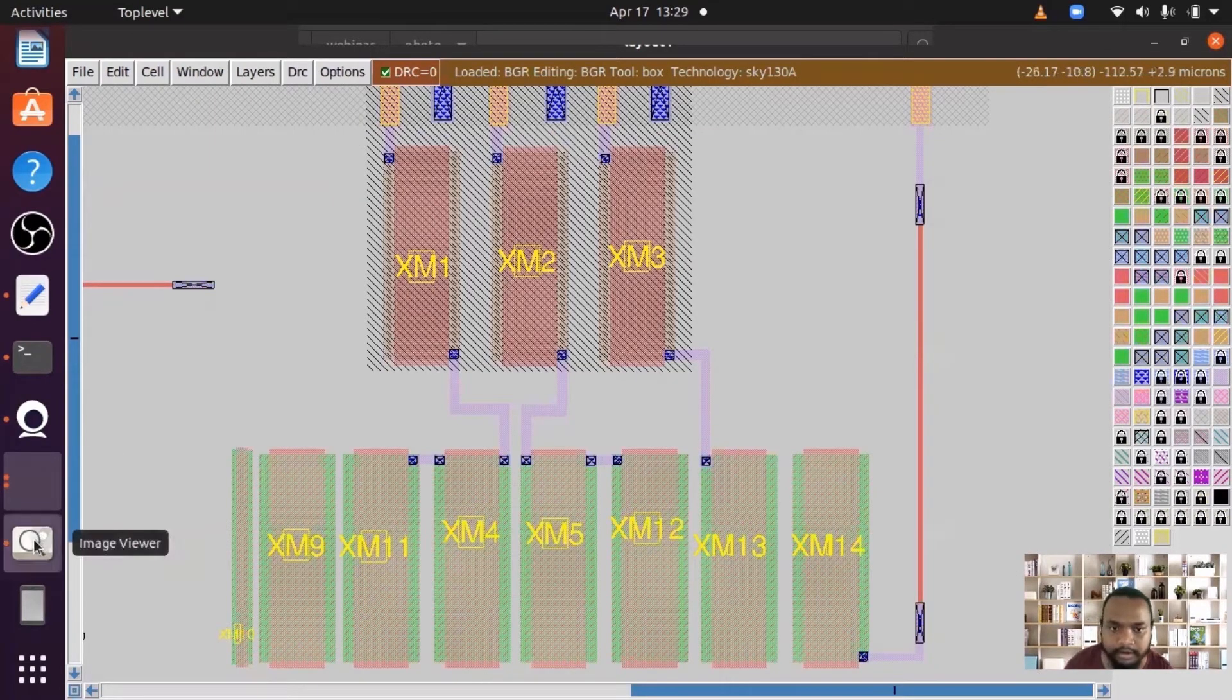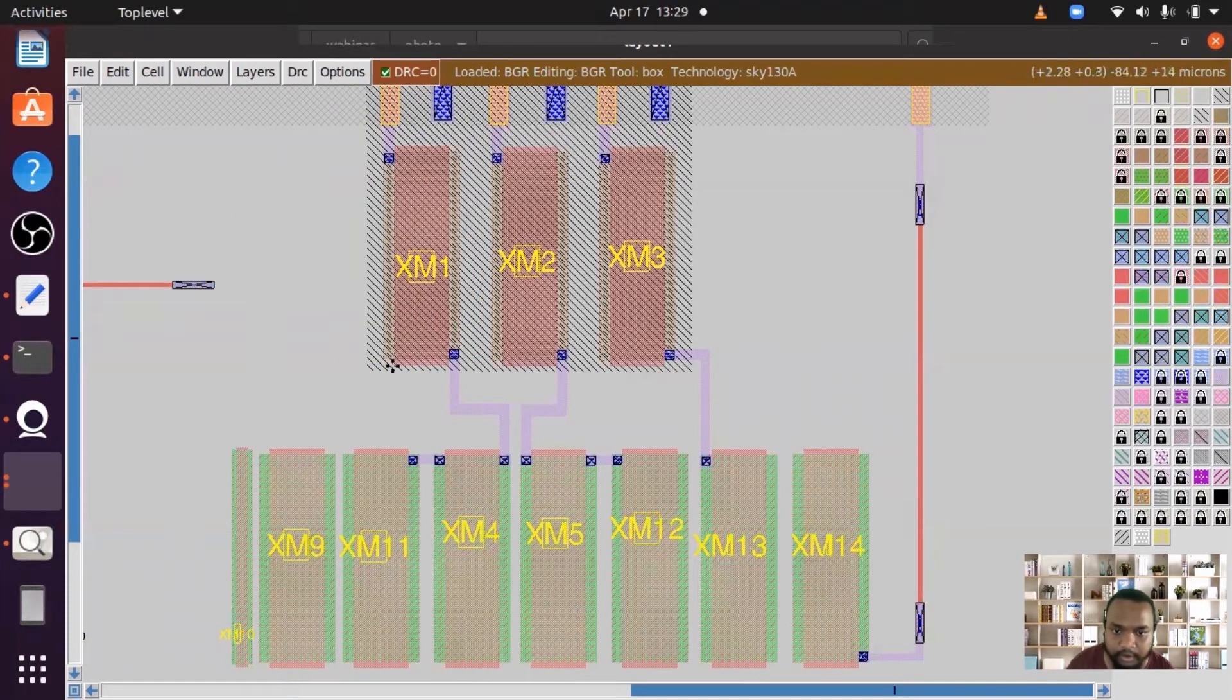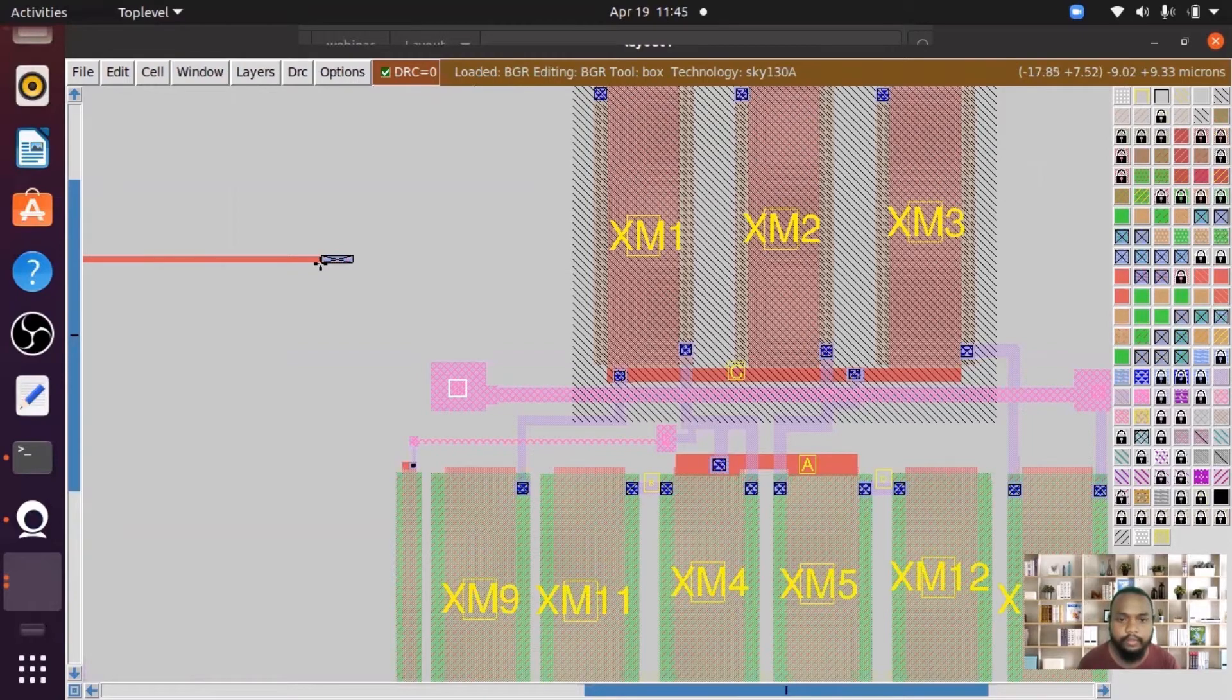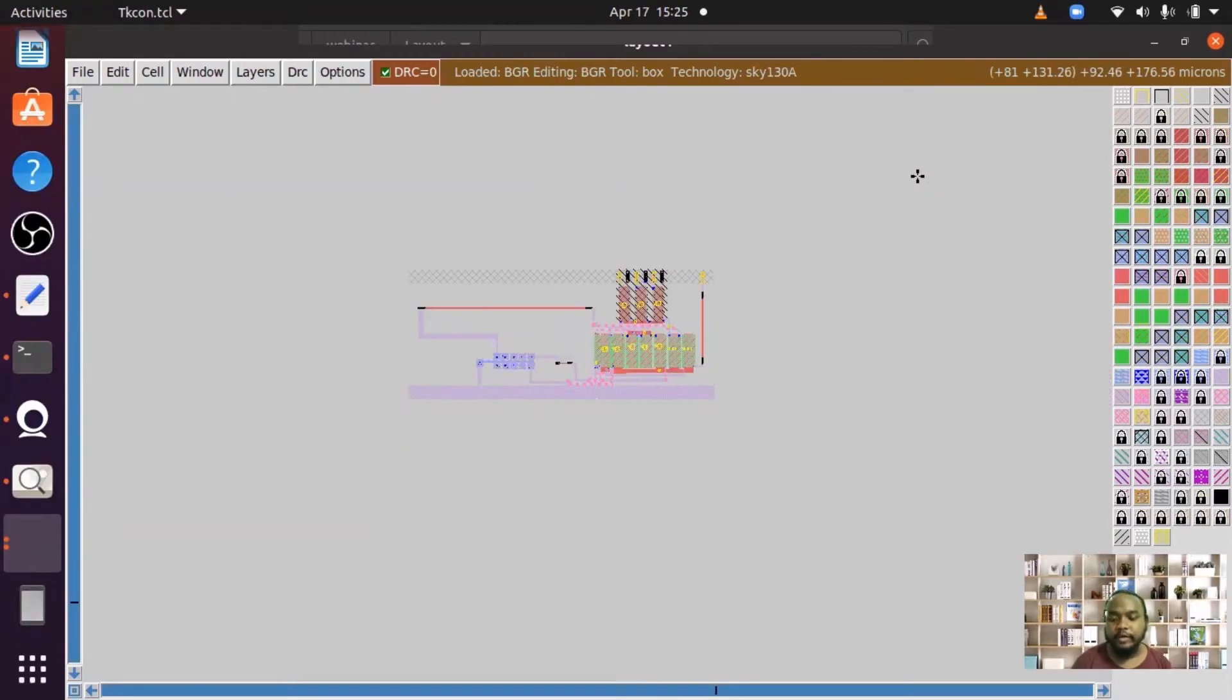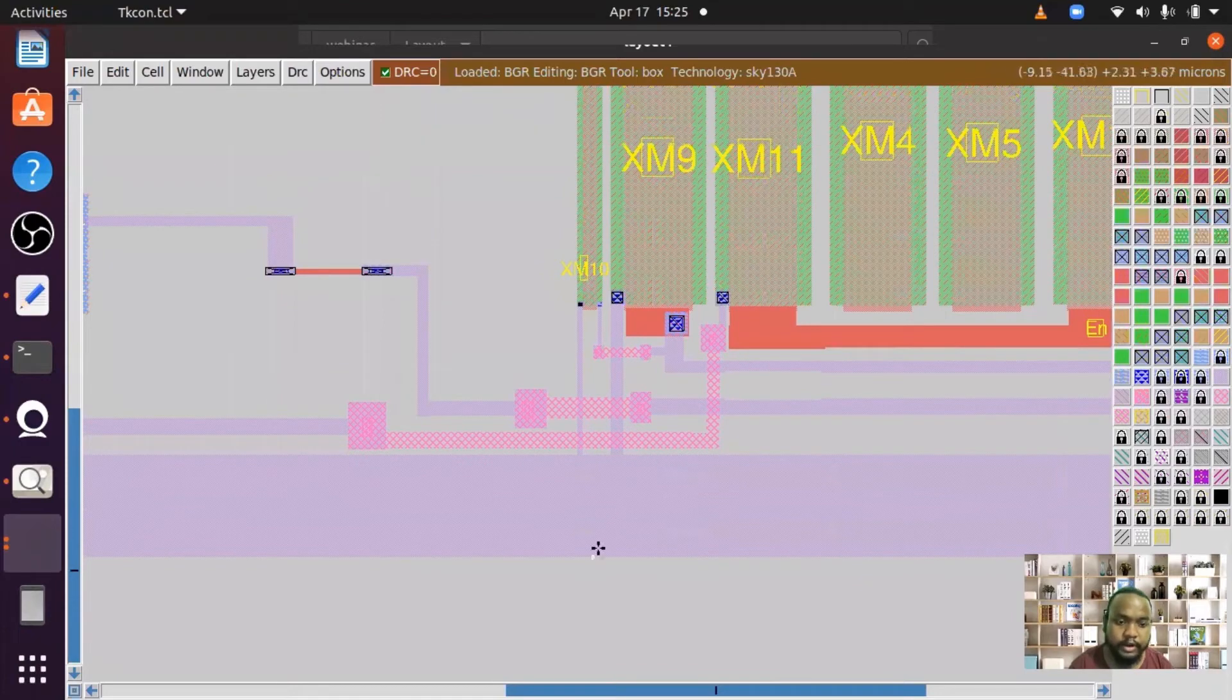From the circuit we can see the gates of XM1, XM2 and XM3 are connected. We will connect them using the polysilicon layer. And we have to make the contact here from the resistor to the metal gun. But here we have forgot to put the substrate terminal of NLO. We will do this now.